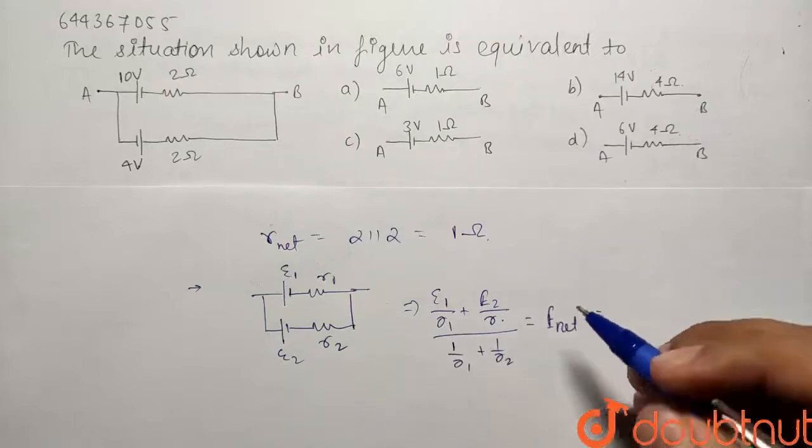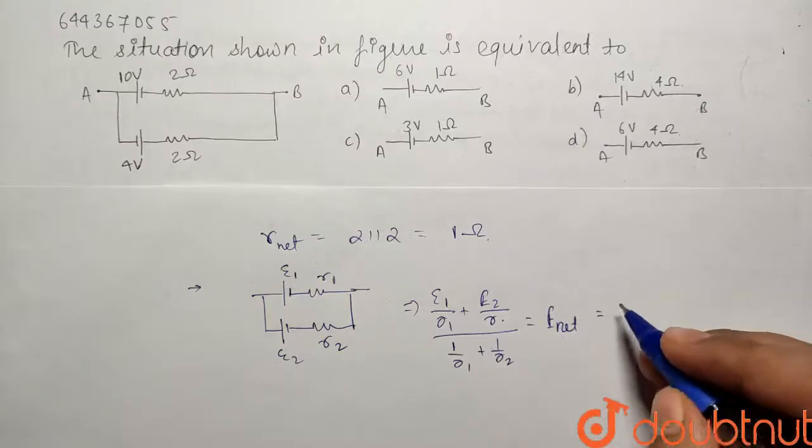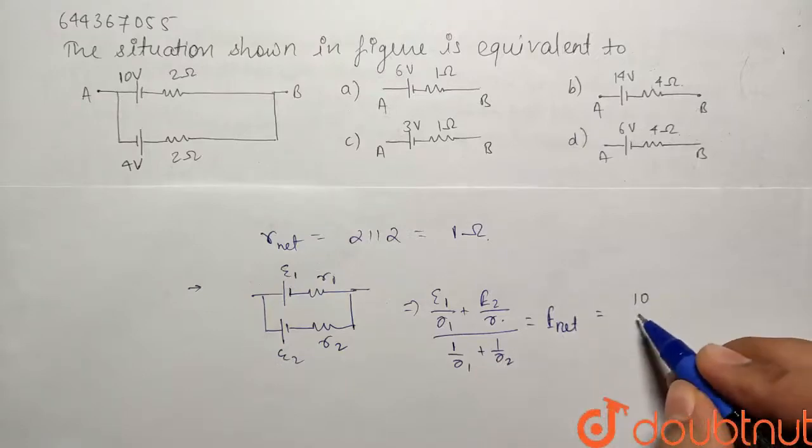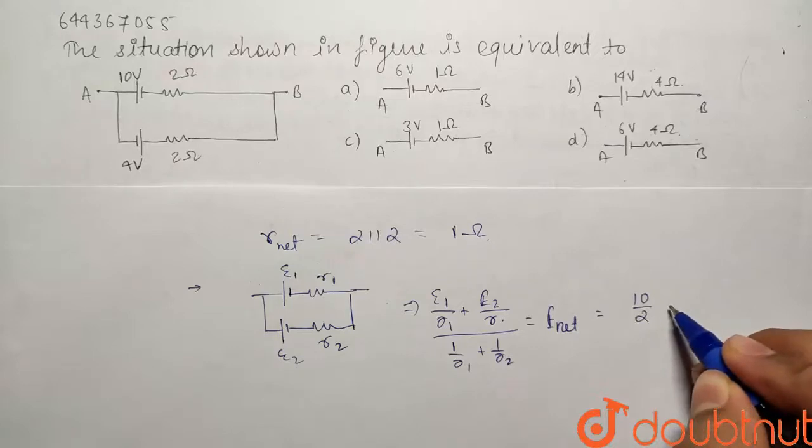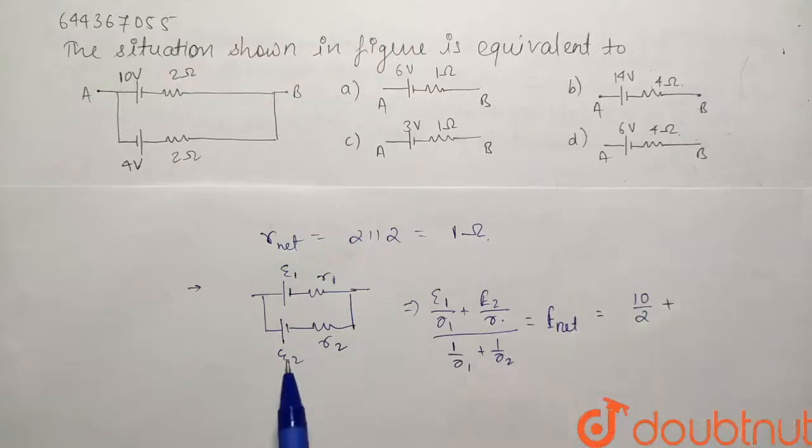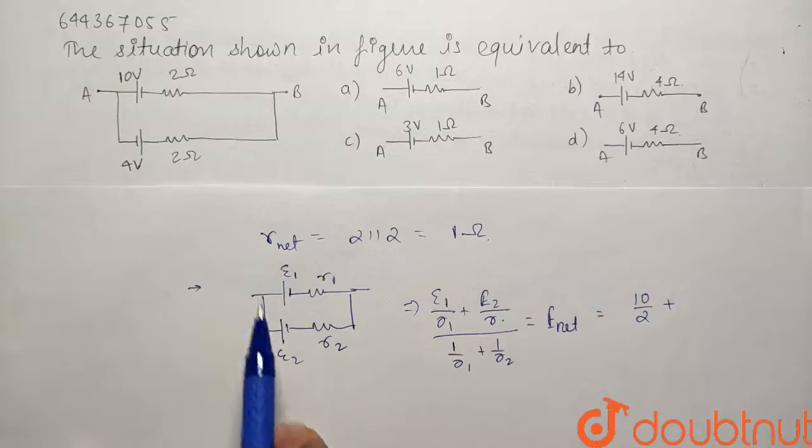So if we find out for the given condition what we will have is E1 is 10 volts divided by the resistance that is 2 ohms. Now here the sign of E2 is going to be different, so it will not be plus 4, we'll put minus 4 because the poles are in different connection in both of the circuits.